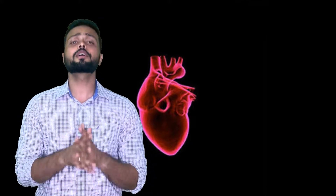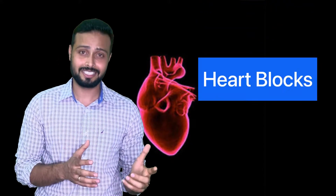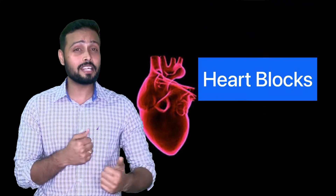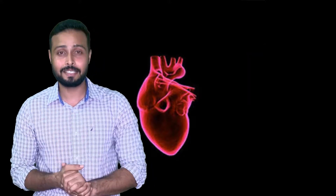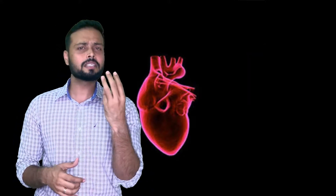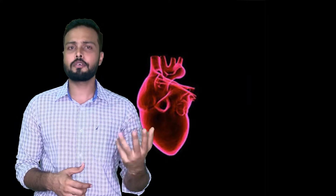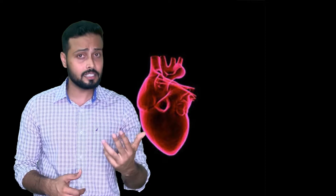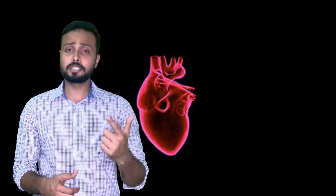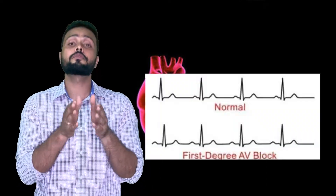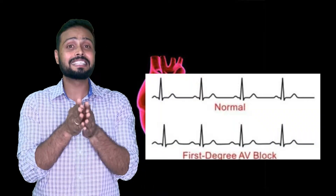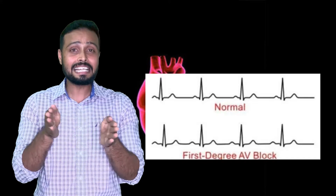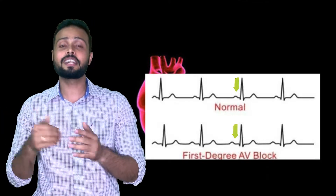First, we are going to learn about heart blocks and how to identify them in ECG. There are mainly three degrees of heart block: first degree, second degree, and third degree. First degree heart block is identified if there is any delay in the PR interval.